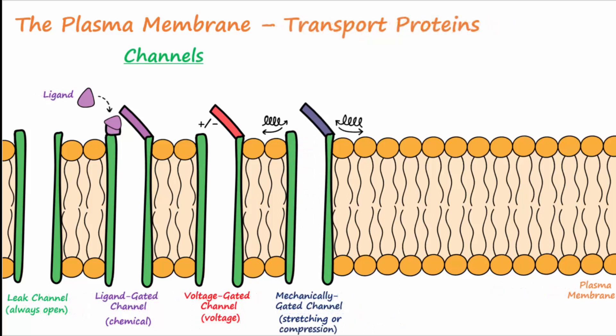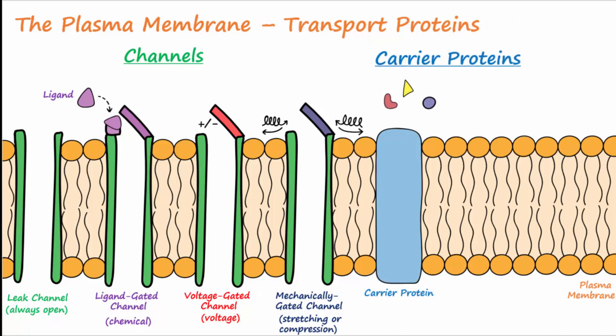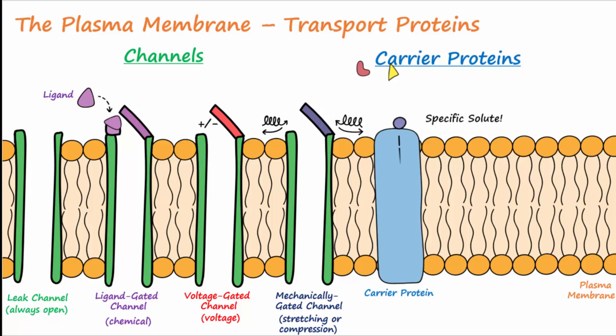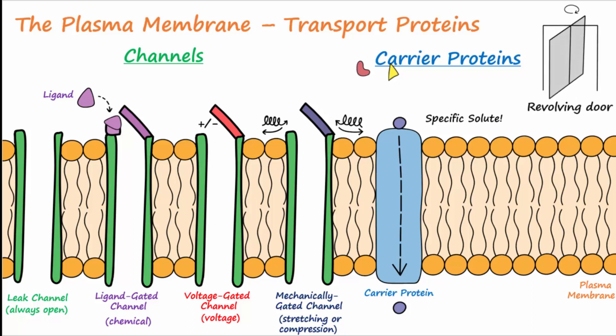Another type of transport protein are carrier proteins. Carriers have sites that bind to specific solutes or ions. Once the solute binds, the carrier protein changes shape, allowing the solute to move across the membrane. Imagine a revolving door — as these doors turn they are open to either the inside of the building or the outside, but never open to both sides at the same time. The same is true for carrier proteins. The binding of the solute causes the protein to change shape and open to the opposite side of the membrane.